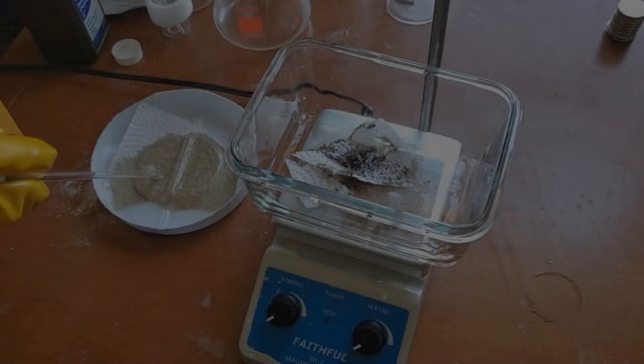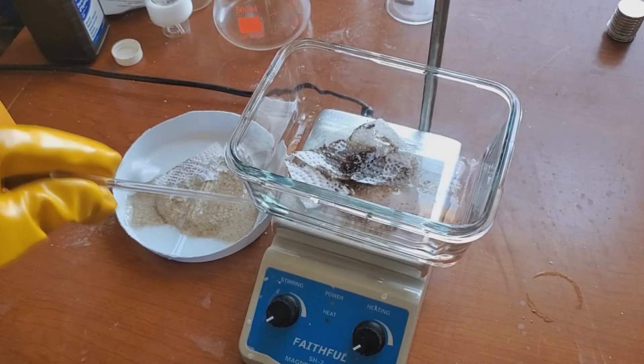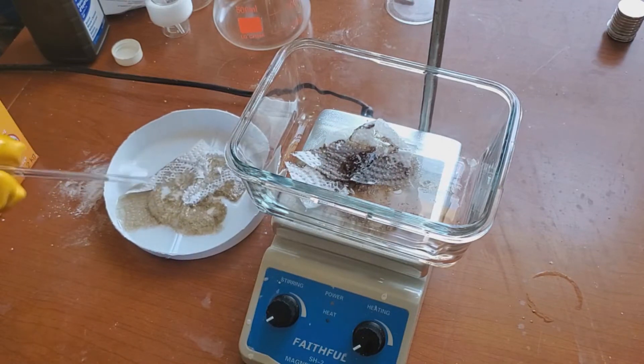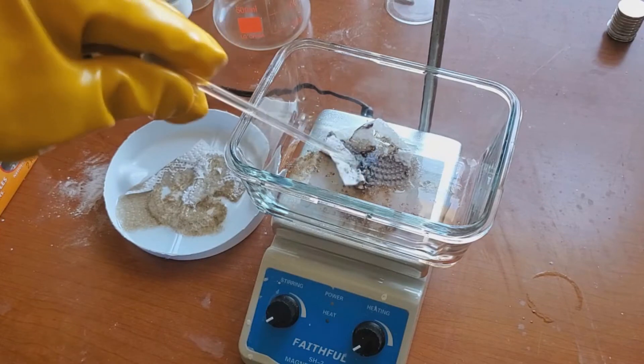Hello, so today we are going to be making diluted piranha solution from sulfuric drain cleaner and 3% hydrogen peroxide. 3%, 6%, 12%, and 30% will all work just fine, just mix them accordingly. 3% is just what I had, so that's what we're going to use.